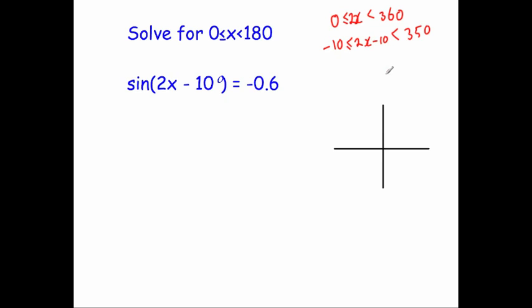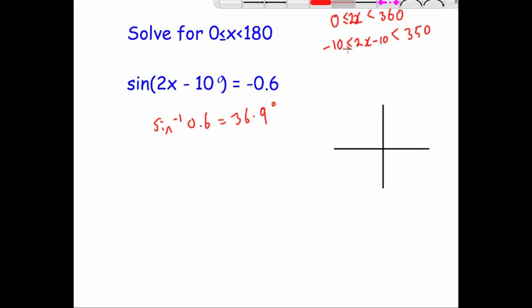Now what we need to do is consider our CAST diagram. We've got sine and negative 0.6, so we're going to do the inverse sine of just 0.6 to find the acute angle. Shift sine 0.6 gives us 36.9 degrees. We'll put that onto our CAST diagram.